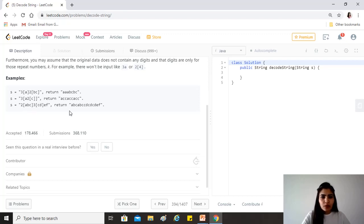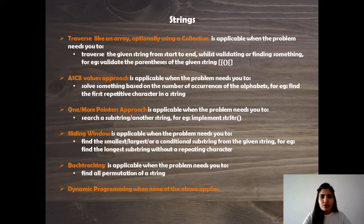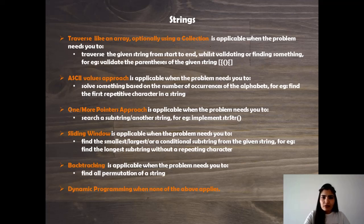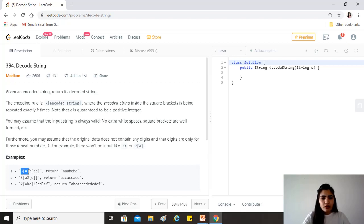This is clearly a question on strings. I think we can solve this with simple traversal, but the question demands we keep track of the number of times a substring needs to be repeated. We also need to maintain a final result string along with a subset string which handles the problem at hand — for example, handling just the '3[a]' part.